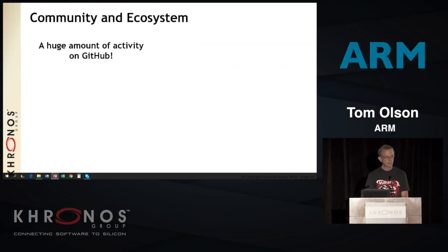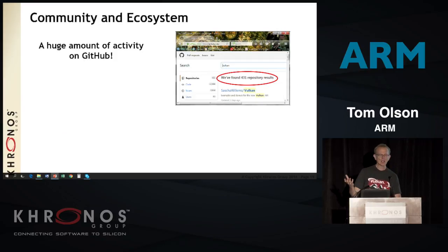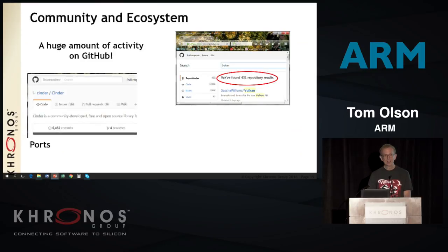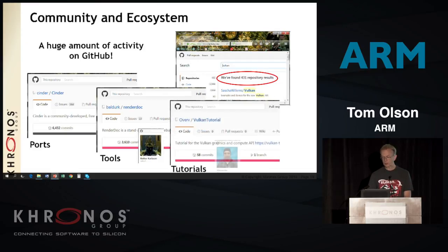There's a huge community out there. I went Monday night to GitHub and typed Vulkan into the top-level search — there are 431 projects on GitHub that have some level of Vulkan involvement. I found lots of people adding Vulkan backends to existing projects. There are some really awesome tools out there, in particular RenderDoc — now it has Vulkan support, and that is something you should absolutely check out. We're particular fans of Alexander Overhaul's Vulkan tutorial — check that one out too.